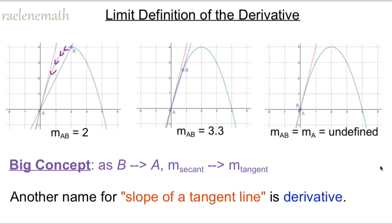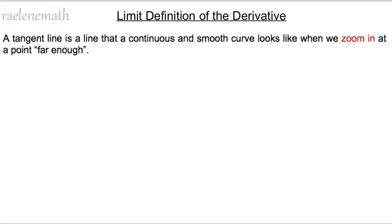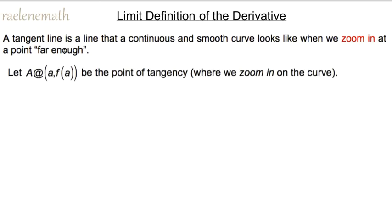Another name for a tangent slope is derivative. Here we have some information about tangent lines that we need before we get the derivative. First of all, a tangent line is a line that a continuous and smooth curve looks like when we zoom in far enough at a point.